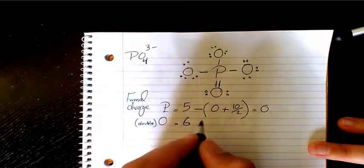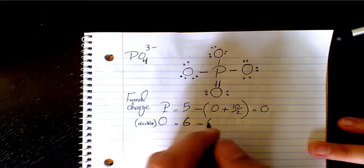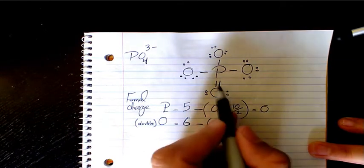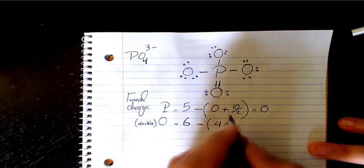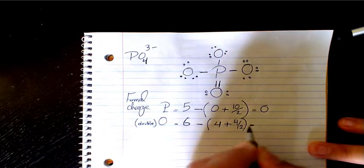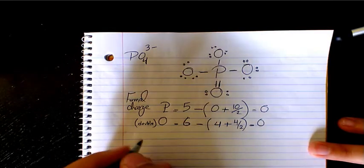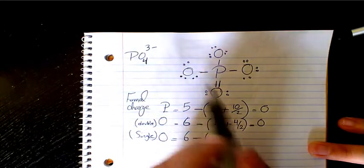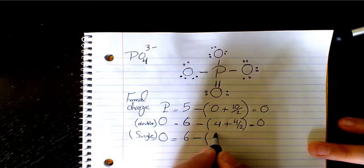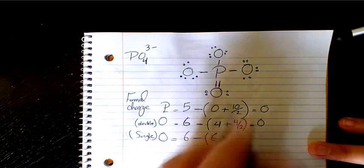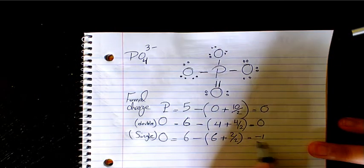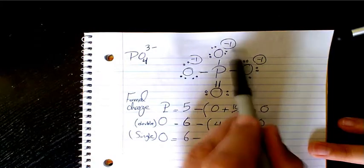For the double-bonded oxygen: 6 valence electrons minus 4 non-bonding electrons minus half of 4 bonding electrons equals 0. For each single-bonded oxygen: 6 minus 6 non-bonding electrons minus half of 2 bonding electrons equals negative 1.